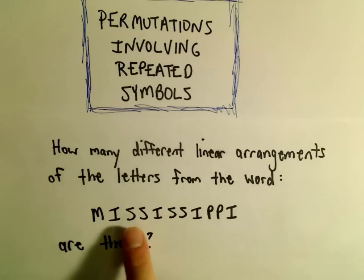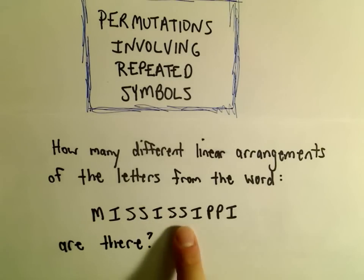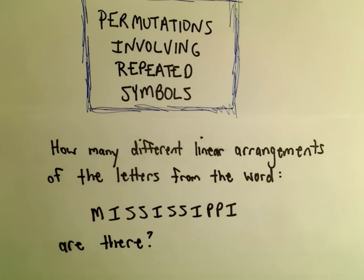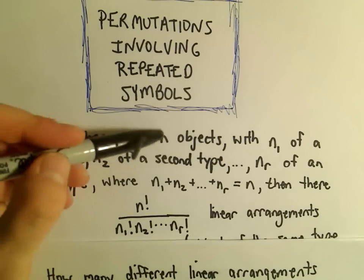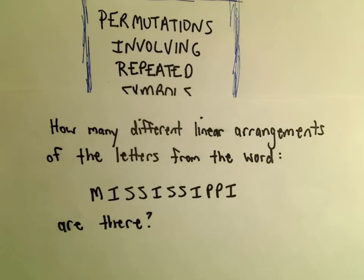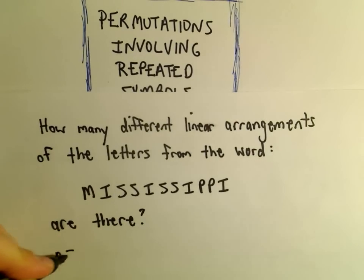The idea is, for example, we've got four S's here and the S's are all going to be indistinguishable. The formula says if there are n objects total, in this case the number of objects is going to be the number of letters.